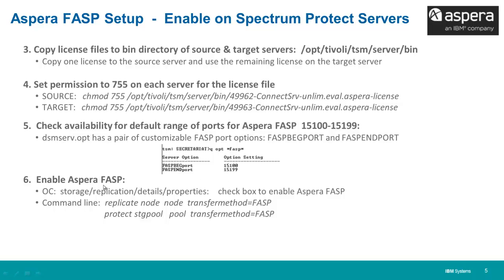To enable Aspera FASP for your Replicate Node and Protect Storage Pool commands, you can either go into the Operations Center under Storage > Replication > Details > Properties and check the Enable Aspera FASP box, or when issuing the command line Replicate Node or Protect Storage Pool commands, specify transfer method equals FASP.